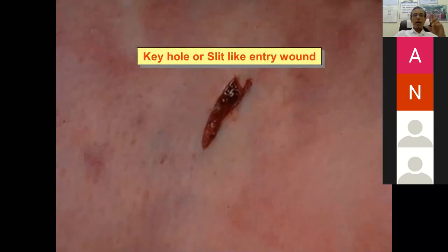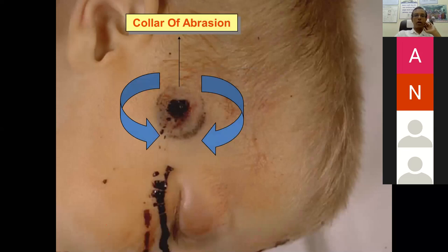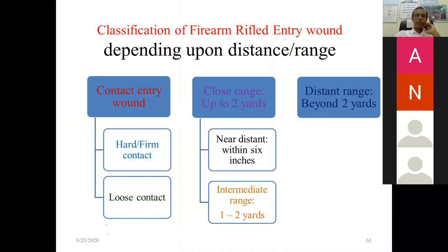The entry wound is usually circular, or oval if at an angle; sometimes slit-like. The collar of abrasion is due to friction of the bullet with the skin. Wounds are classified according to range of fire: contact wound, near distance (within 6 inches), intermediate range (1 to 2 yards), and distance range (beyond 2 yards).